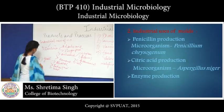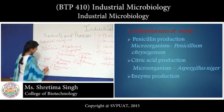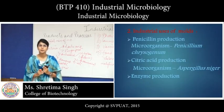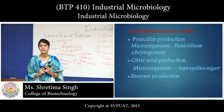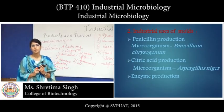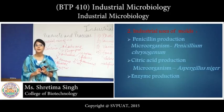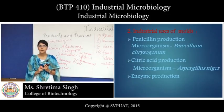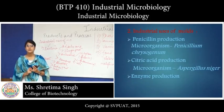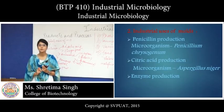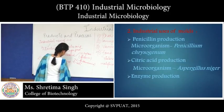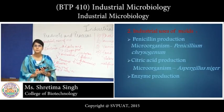The last group is molds, belonging to the fungi group. Different components produced by molds include penicillin, which is an antibiotic produced by the mold Penicillium chrysogenum. Certain enzymes are also produced by molds. Another important compound produced by molds is citric acid, which is produced by the mold Aspergillus niger.